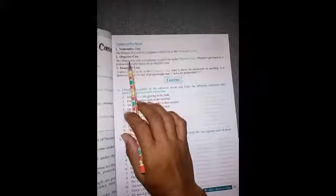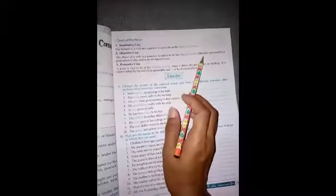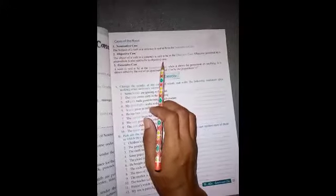Second one is objective case. The object of a verb in a sentence is said to be the objective case. Sentence mein verb ka object hota hai, use hum log objective case kehte hain. Object governed by a preposition is also said to be in objective case.